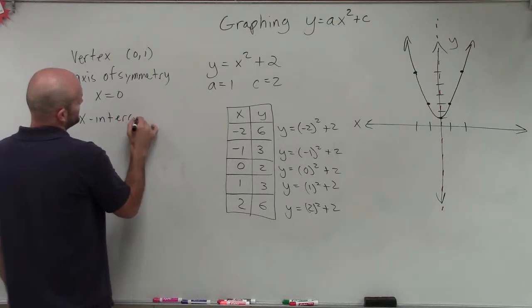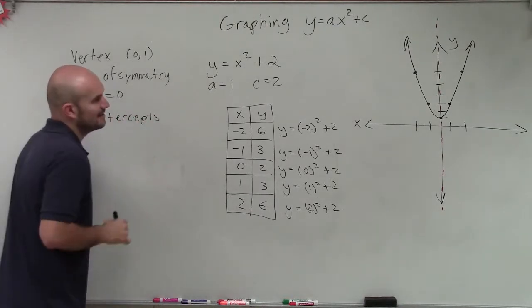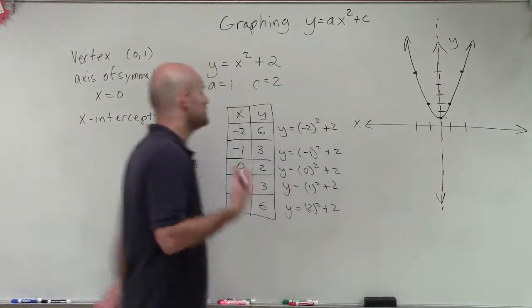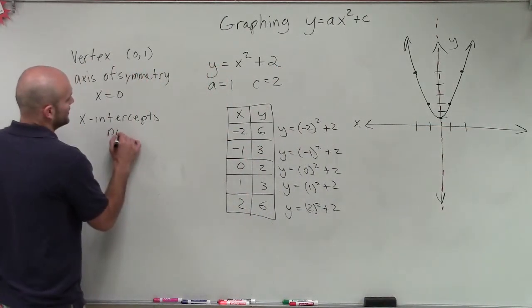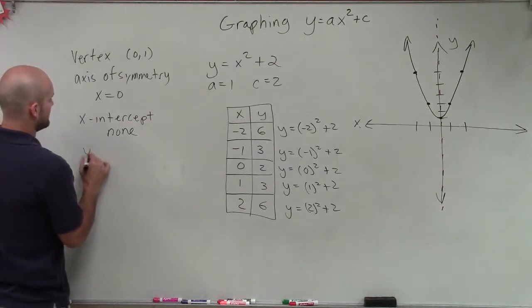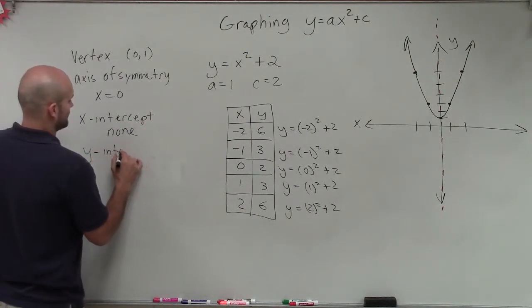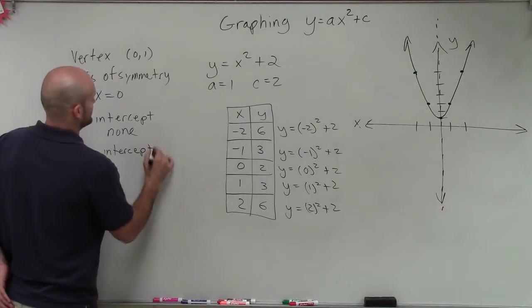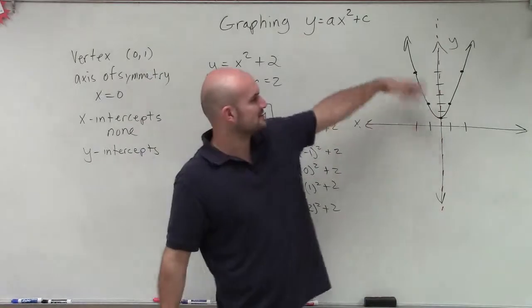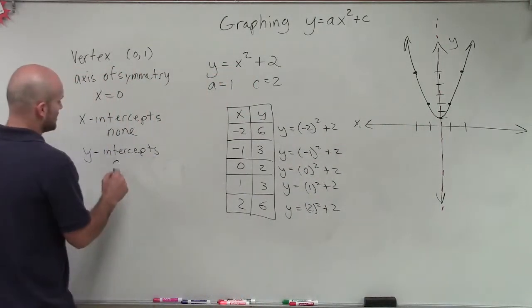Now, when talking about the x-intercepts, we need to see where does the graph cross the x-axis. Well, you can see that this graph does not cross the x-axis. So we're going to talk a little bit more about that later. But we can say there are none for x-intercepts. And then we have y-intercepts. Actually, we're going to learn why they're going to be plural. Our y-intercept, the graph crosses at the y-axis at 0, 2.